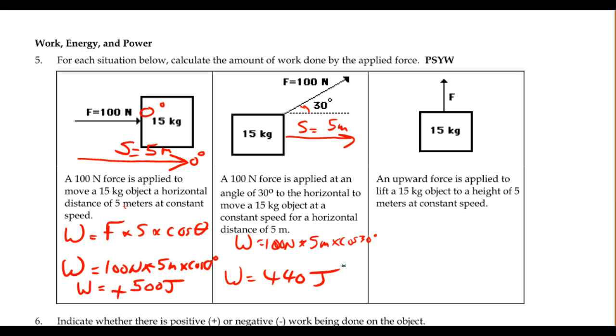Now notice, since we pulled at an angle, not all of the 100 newtons made the box speed up, or made the box move. Some of it was directed upward, lifting it off the surface. So only a portion of that force did the work. We deal with how much that portion is by always using the cosine of the angle between the force and the displacement.